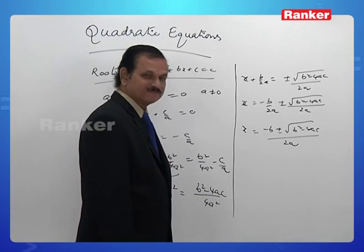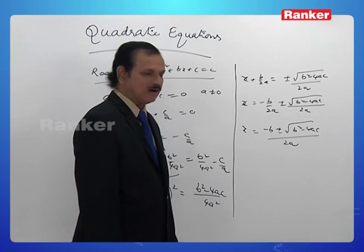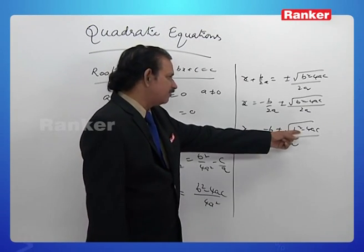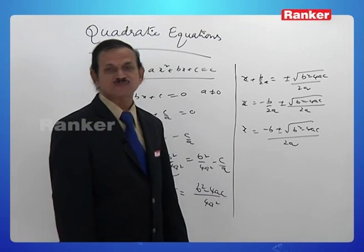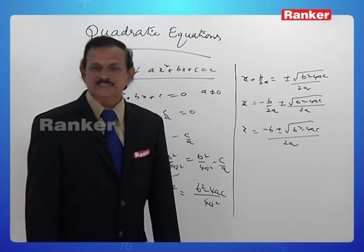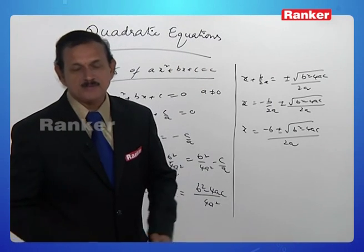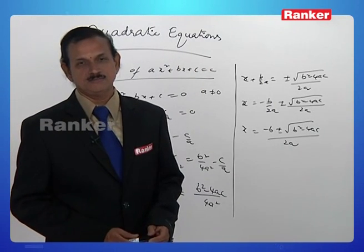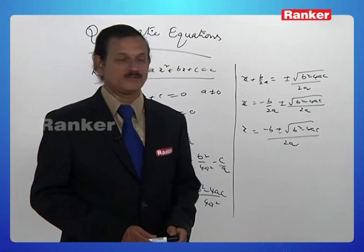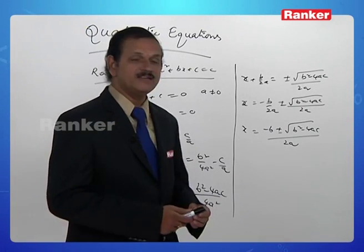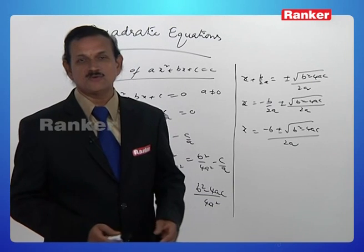Therefore, the nature and character of the roots of this equation are absolutely dependent on the nature of b² minus 4ac. That is why that particular number, b² minus 4ac, is called the discriminant of the equation or discriminant of the quadratic expression ax² plus bx plus c, because that is the deciding factor to know the nature of the roots.